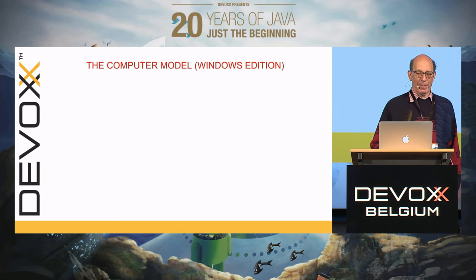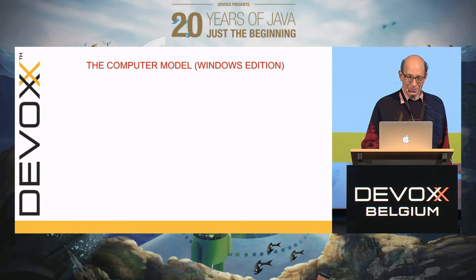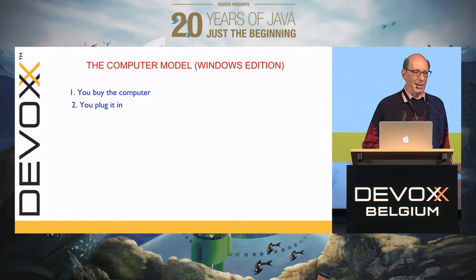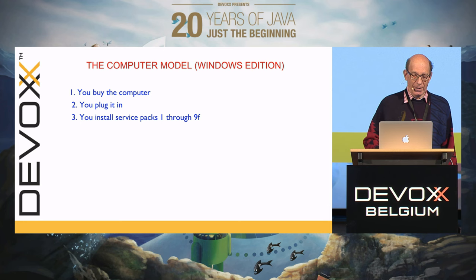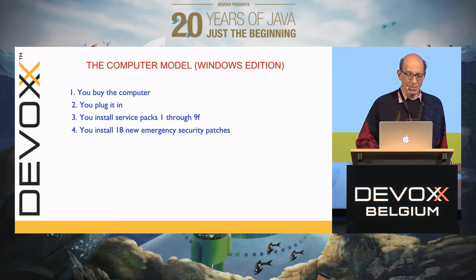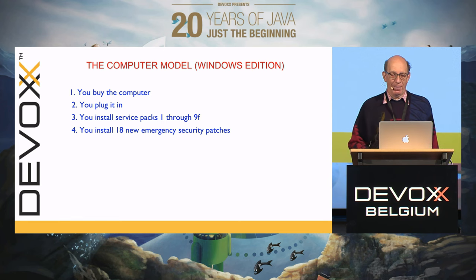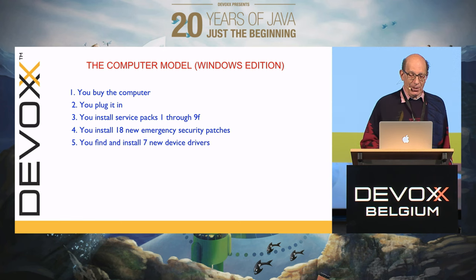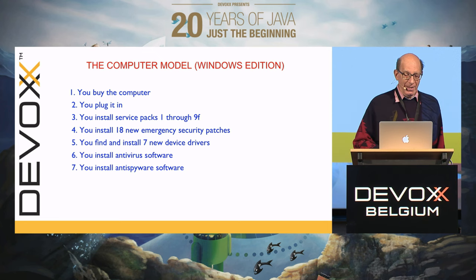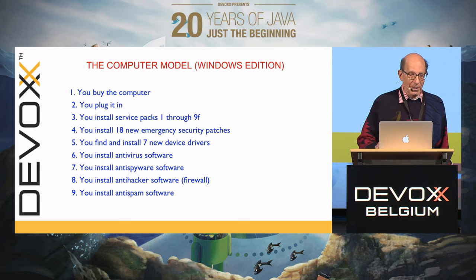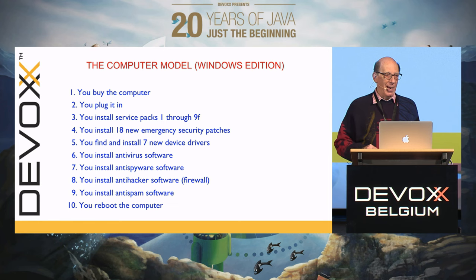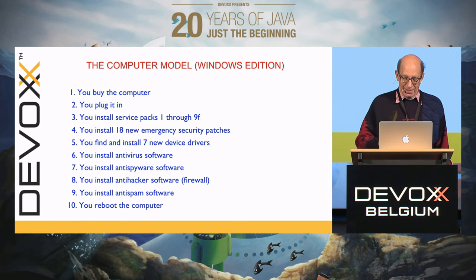Now let's try the computer model, especially the Windows edition. You buy the computer, you plug it in — we're two thirds of the way there, right? It's just this little step about it working perfectly for the next 10 years that isn't quite there. First, you have to install service packs one through 9F. Then you install 18 new emergency security patches that came after 9F. Then you've got to find and install seven new device drivers, because they change every 15 minutes. Then you've got to install the antivirus software, the anti-spyware software, the anti-hacker software and firewall, and the anti-spam software. Then you have to reboot the computer. And I'm actually not done — I just ran out of space on the slide.